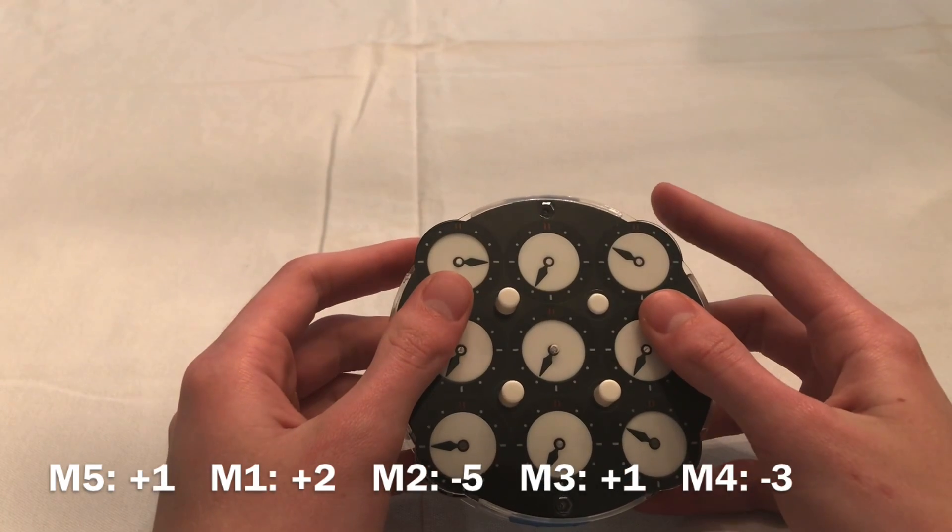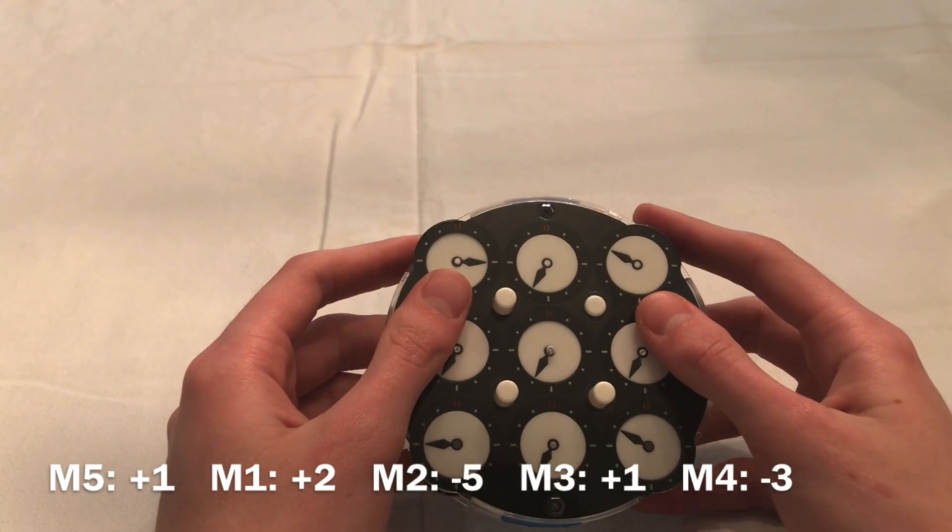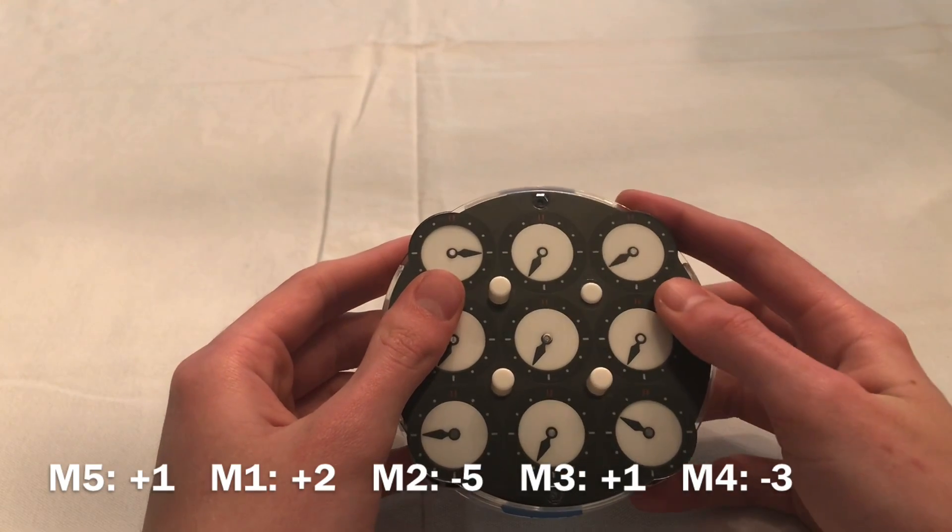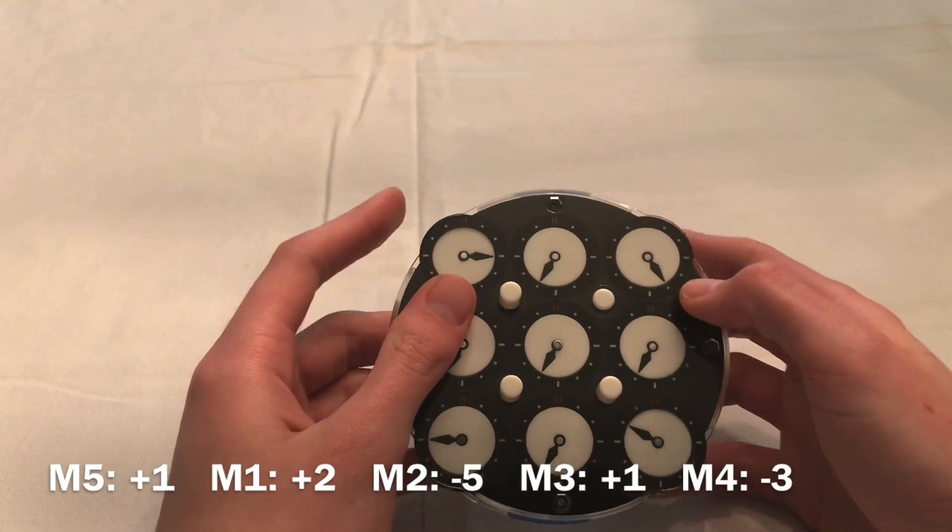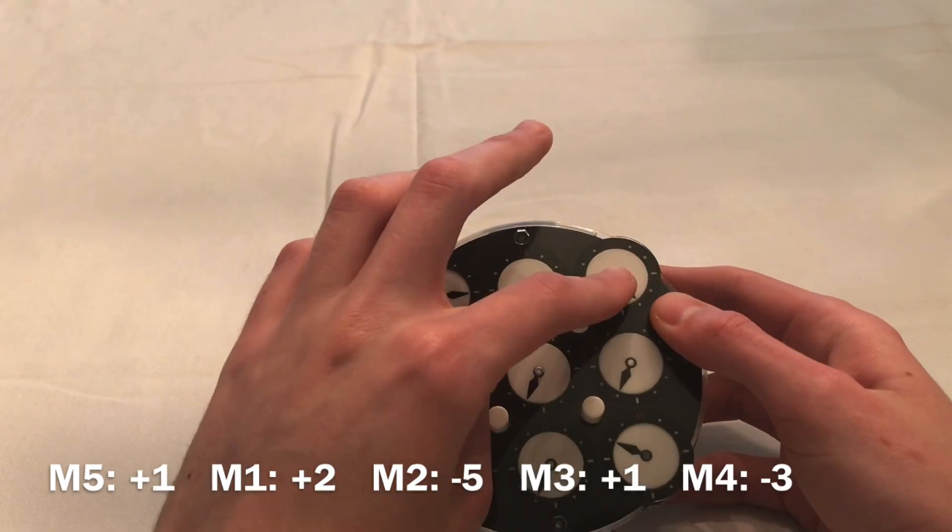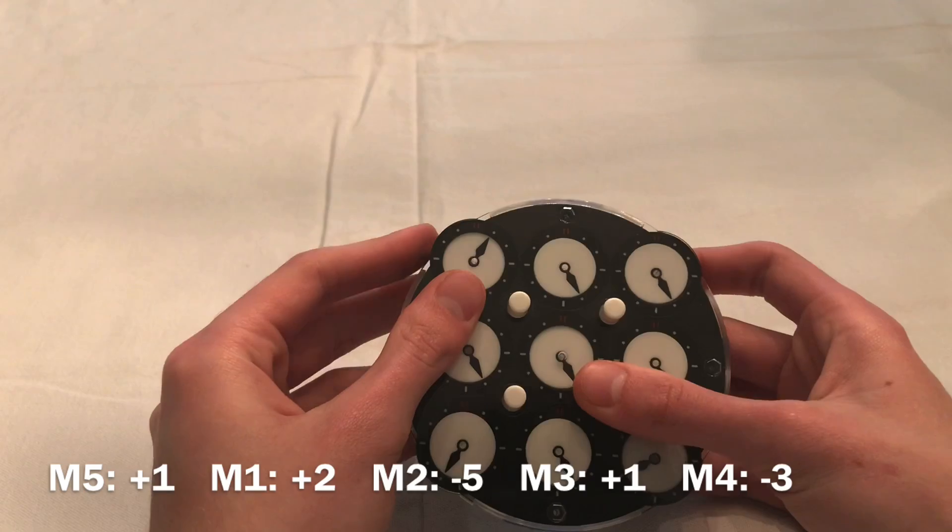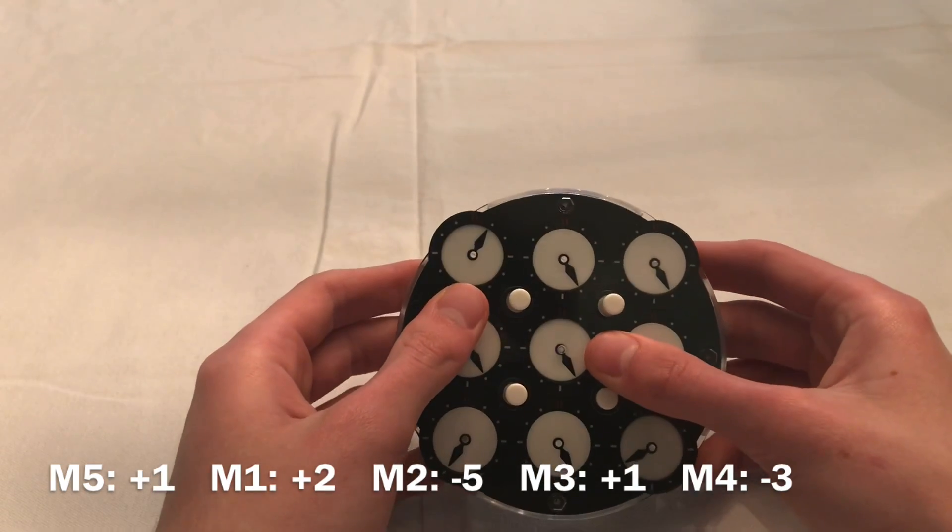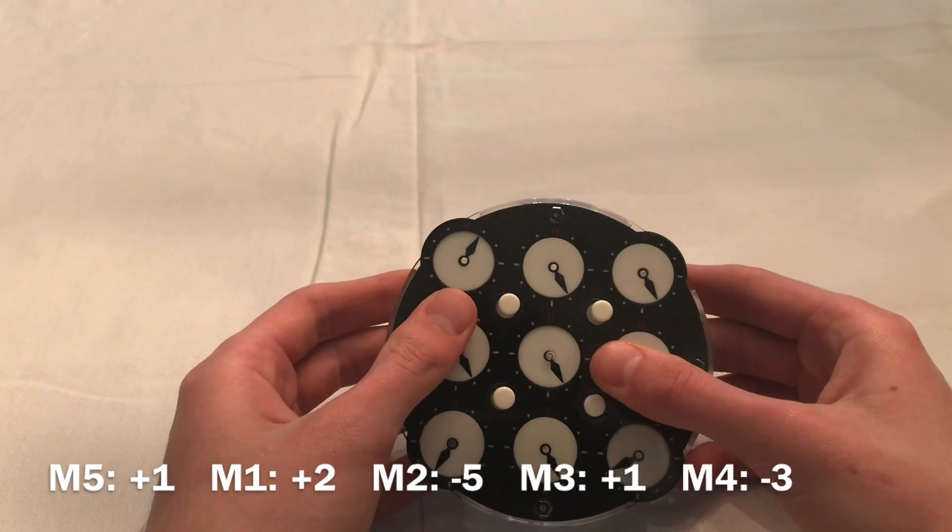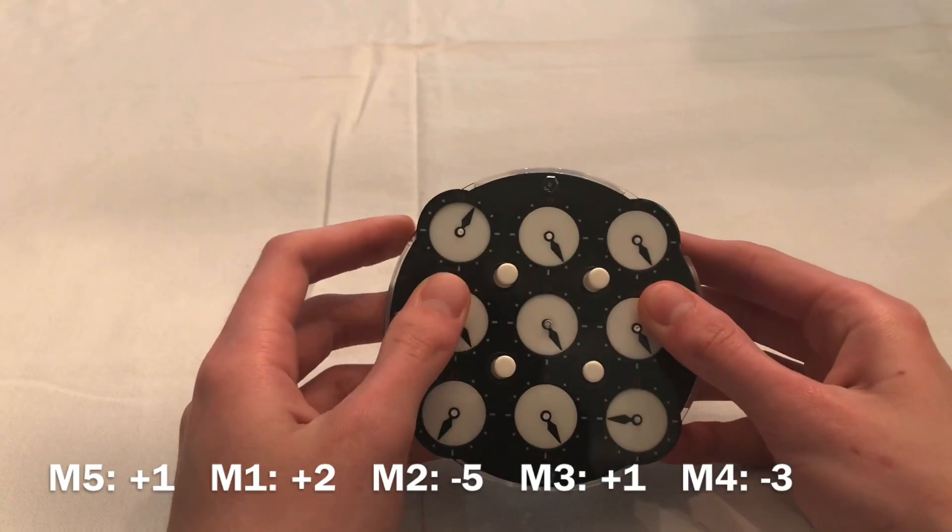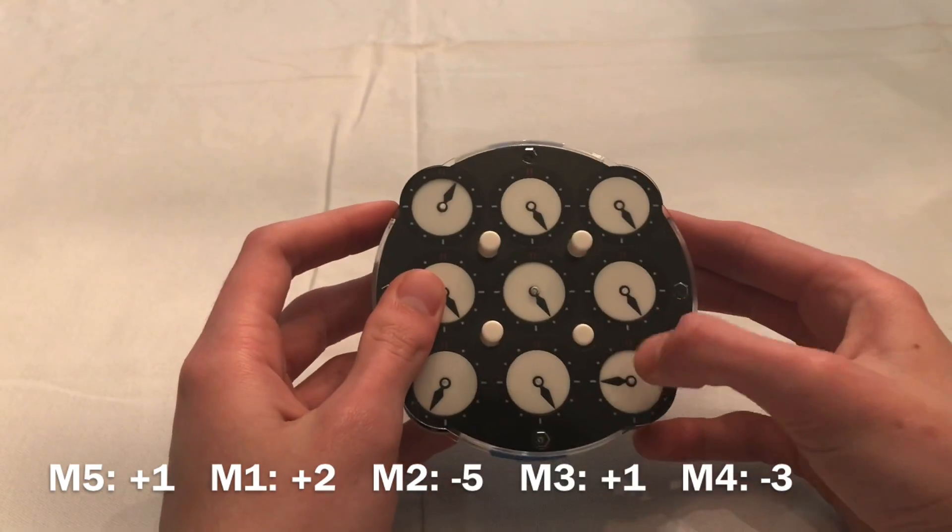Next, I do M2, which is negative 5. And then I can solve these to match this corner. Then M3, which was 1. And then I can solve these to match this corner.